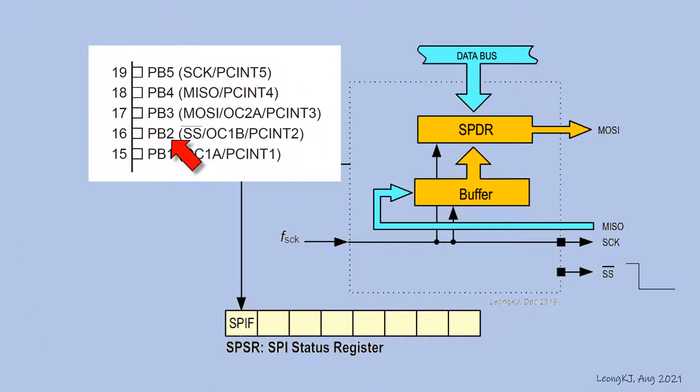If PB2 is selected as the slave select pin, this C instruction will set the PB2 pin to low.